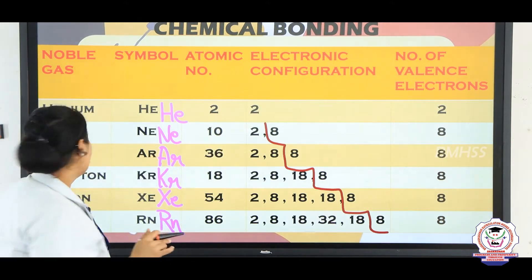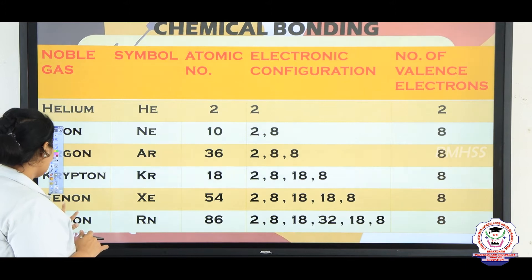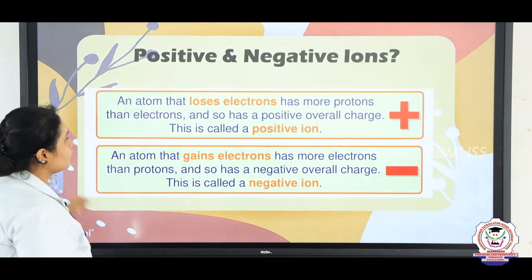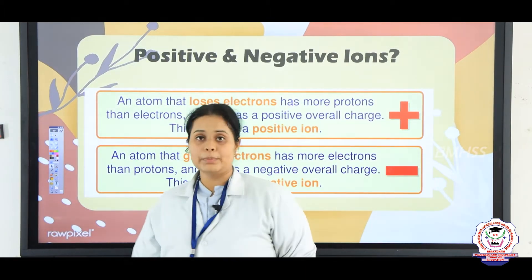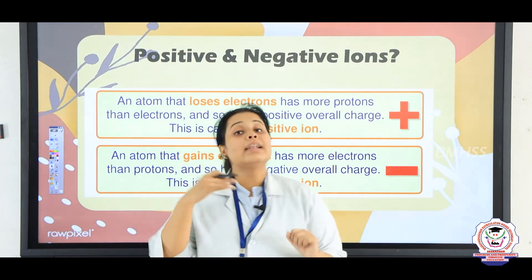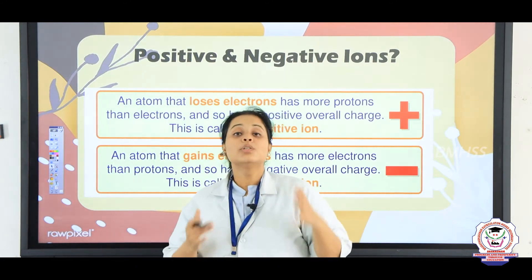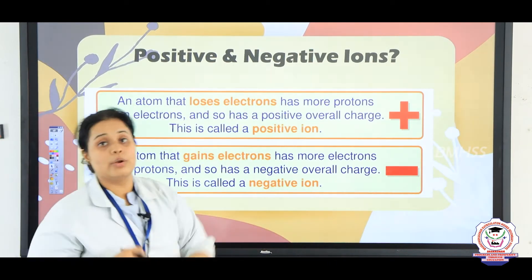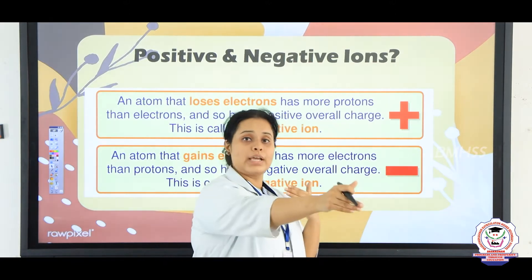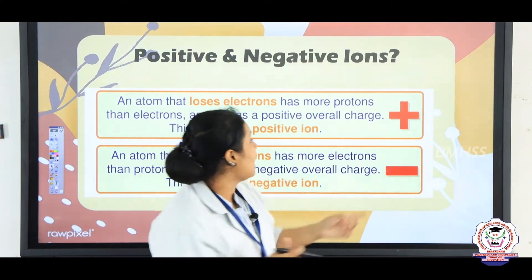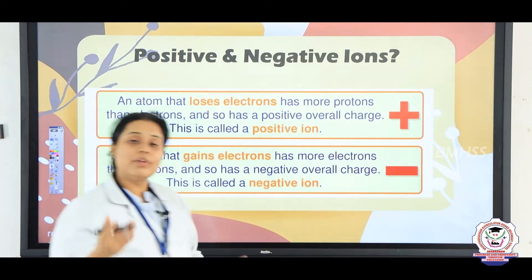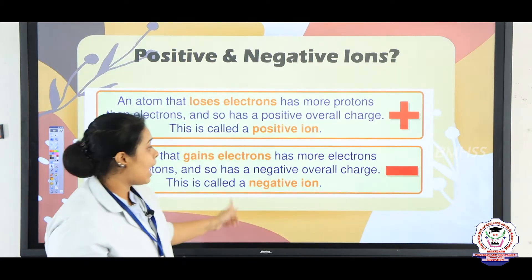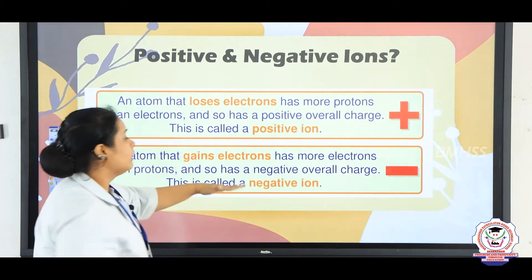The formation of ions is of 2 types. One is the formation of a positive ion and another is a negative ion. Positive ion means an atom that loses an electron — if an electron goes away from an atom, it will have a positive charge. The same way, if an atom has an extra electron added, it will have a negative ion.